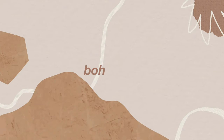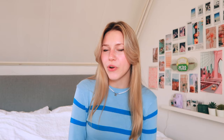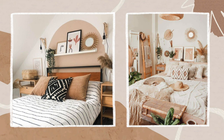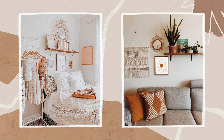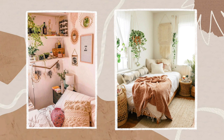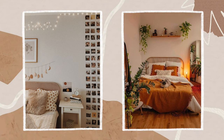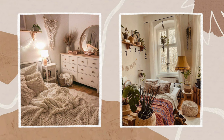Moving on to the bohemian aesthetic, or boho aesthetic. I love this aesthetic — it's so cozy. For colors it's more earth tones: a lot of white, beige, some green tints and orange. When you look at bohemian I always notice how cozy it is — there's a lot of rugs, pillows, and blankets. There's also a lot of prints, and things you hang up on the wall. I also notice a lot of plants.